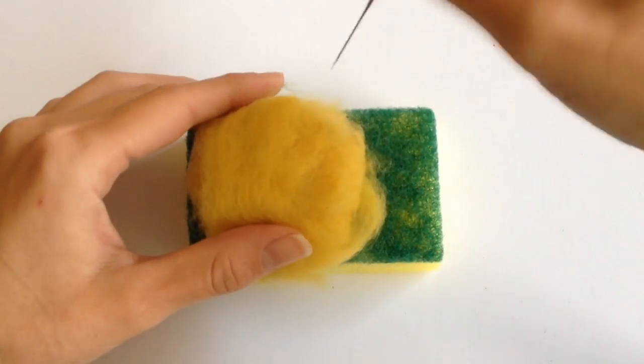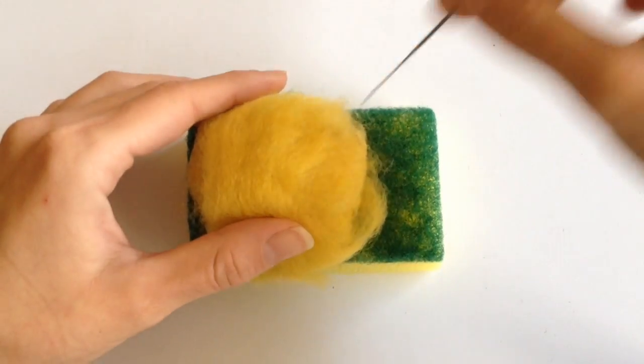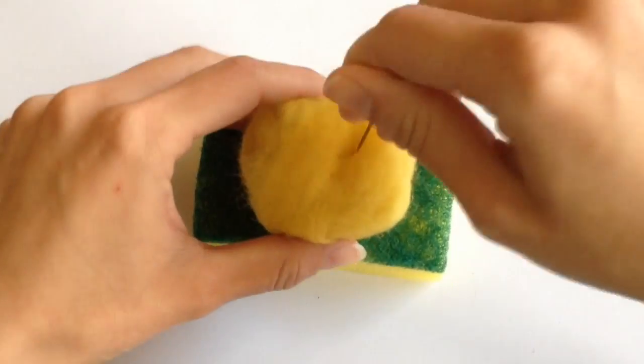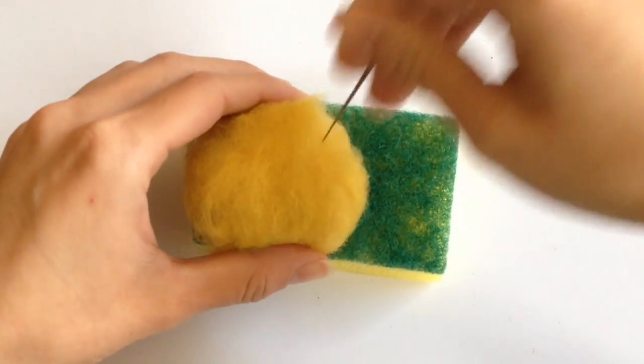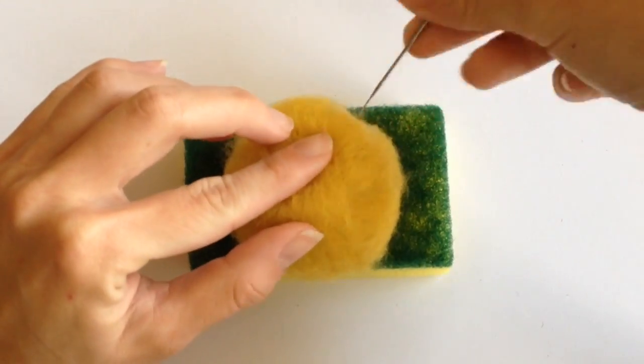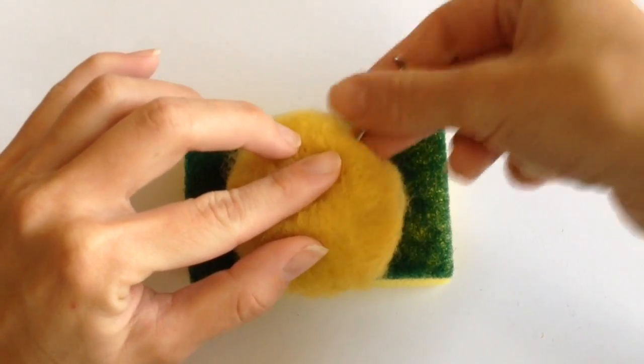Rotate your item every once in a while to make it really nice and symmetric. The more times you poke the needle into the wool, the more solid it becomes. So you have a much firmer object and it becomes smaller with time.